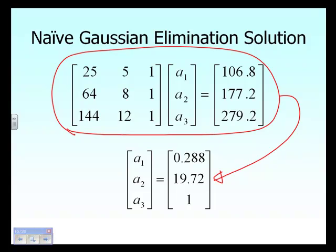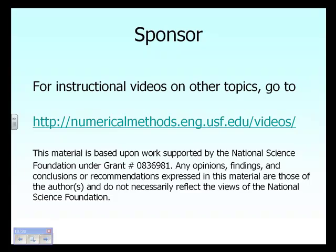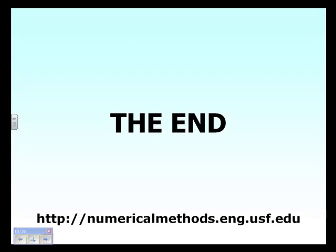No matter how many equations you're given, you should be able to use the Naive Gauss Elimination method in most cases to find the unknowns. If you can carry out the steps of forward elimination and back substitution, you should be able to find the answer to any system of equations, provided it has a unique solution. And that's the end of this segment.